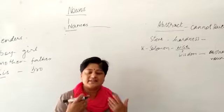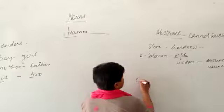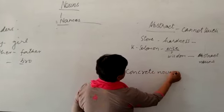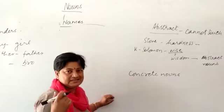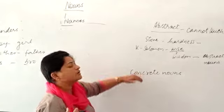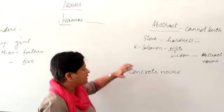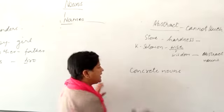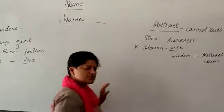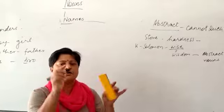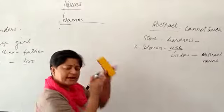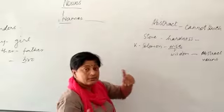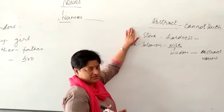But if you can touch something that is called concrete nouns. When you are able to touch the things that is called concrete nouns. You don't have to bother about anything that you are able to touch is concrete. Anything that you are able to touch is concrete - table, desktop, marker, board. Anything that you are able to touch are concrete nouns. Which you are not able to touch are abstract nouns.